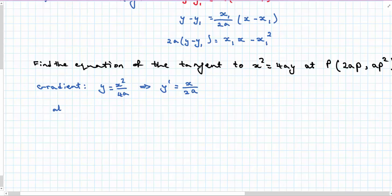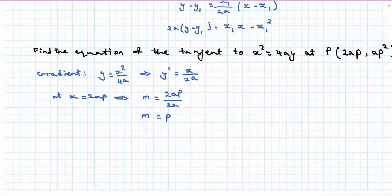x is 2ap. But now my x value is 2ap. So when I substitute 2ap I get something really interesting. My y dash which in this case now I can write as m specifically at the point, 2ap over 2a results in p. And in my last video I mentioned there is a reason why we picked this specific relationship for our parametric equation.